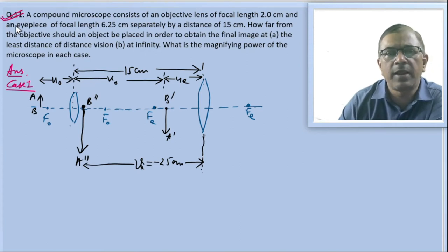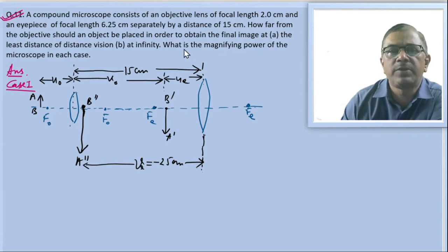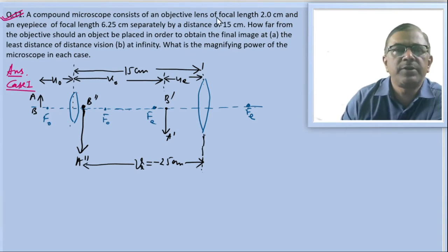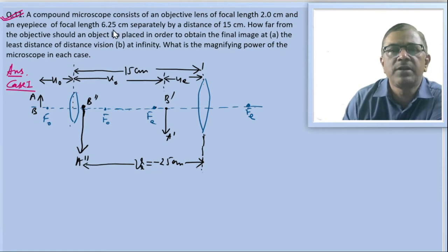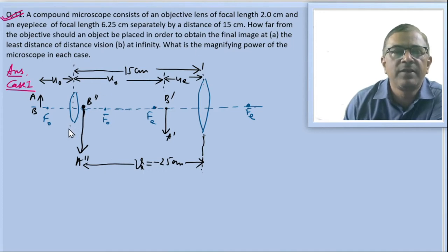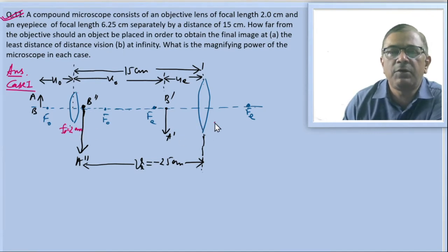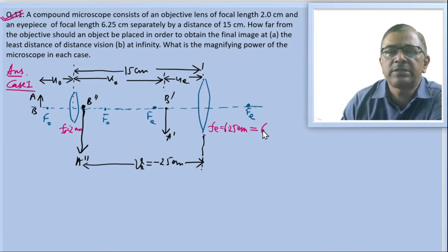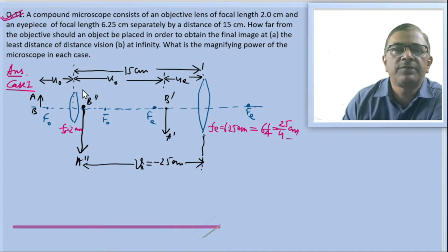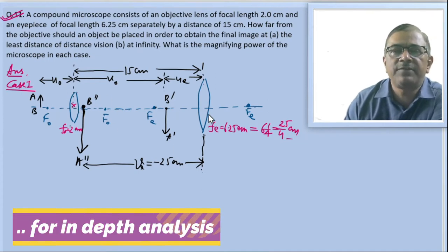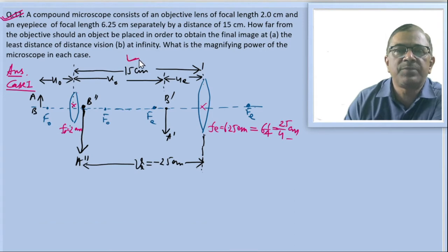As per problem 9.11, the objective lens has focal length 2.0 centimeter, the eyepiece has focal length 6.25 centimeter, and these two lenses are separated by 15 centimeter. In this diagram, the focal length of the objective lens equals 2 centimeter, and the focal length of the eyepiece equals 6.25 centimeter, which can be rewritten as 25 by 4 centimeter. The separation between the objective lens and the eyepiece equals 15 centimeter.